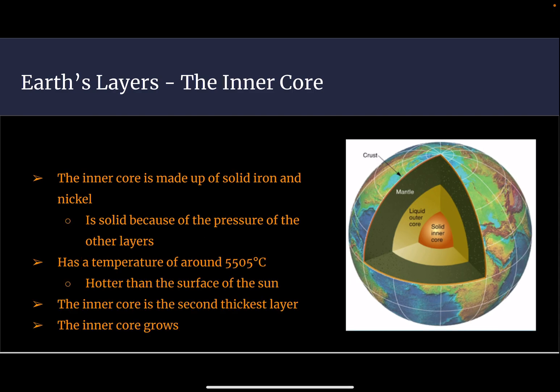The inner core is made of solid iron and nickel. The inner core is solid because of the pressure put by the other layers onto it. The inner core is even hotter than the surface of the Sun. Its temperature is around 5,505 degrees Celsius. The inner core is the second thickest layer. The inner core also grows over time.